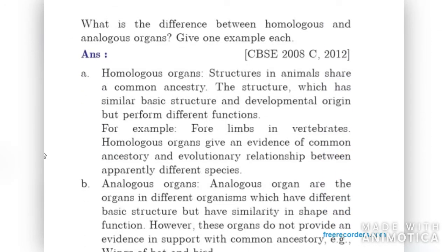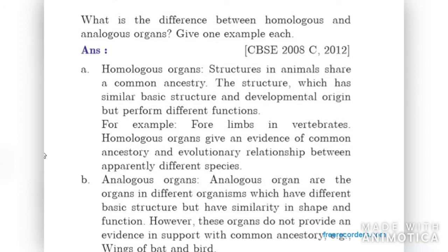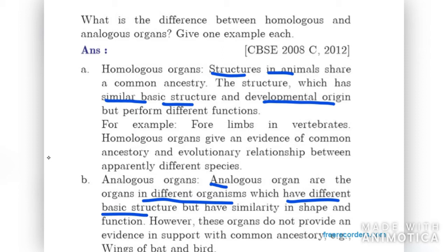What is the difference between homologous and analogous organs? Homologous organs share a common ancestry — their basic structure is similar but they perform different functions, for example, four limbs in vertebrates. Analogous organs have different basic structures but similar shape and function, for example, wings of a bat and a bird — their structure is different but both are used for flying.